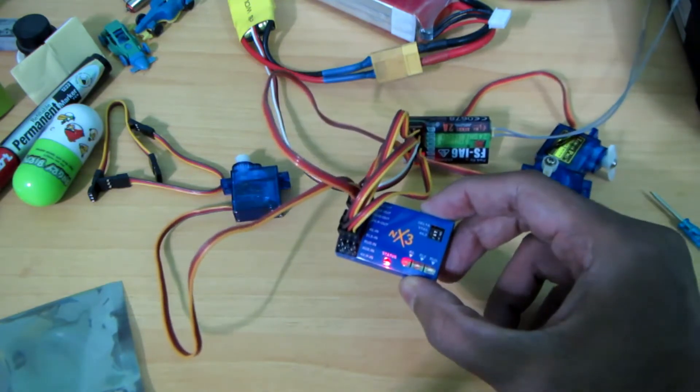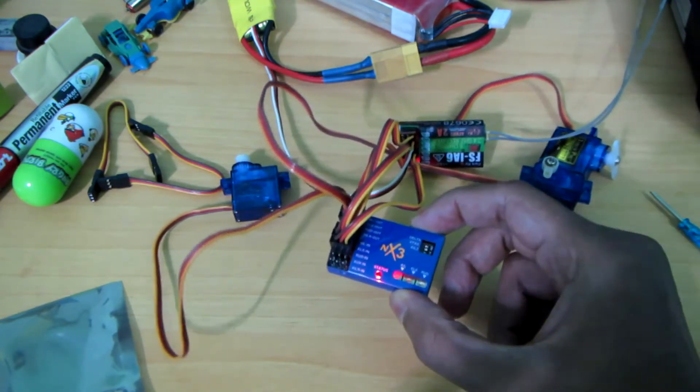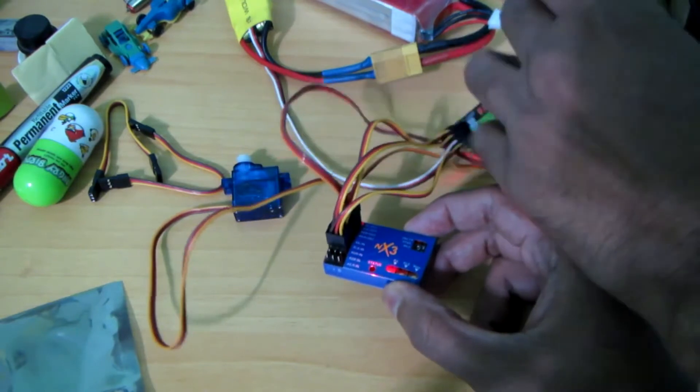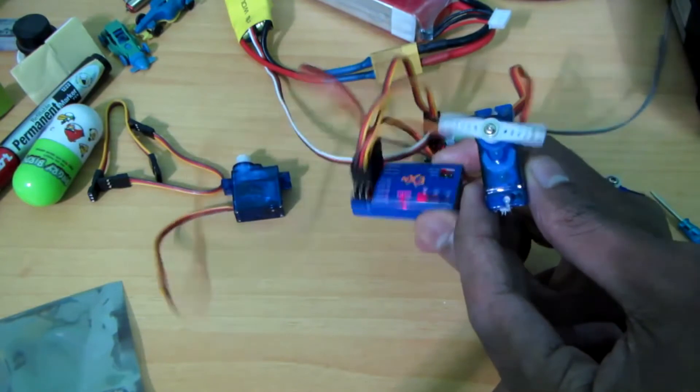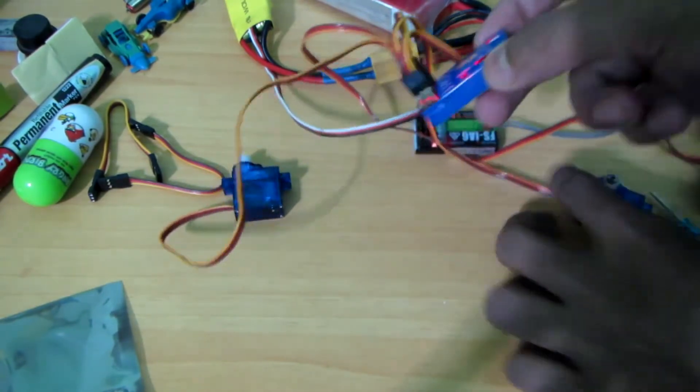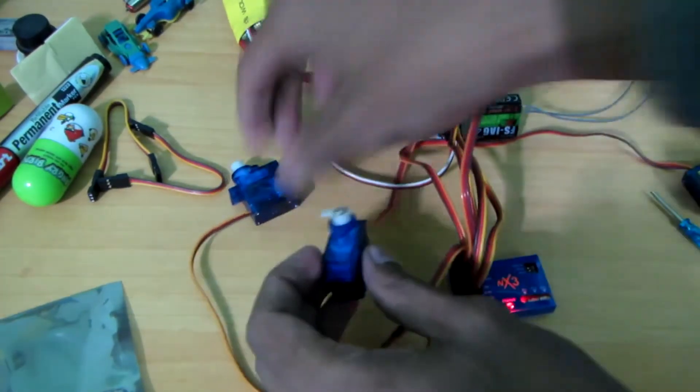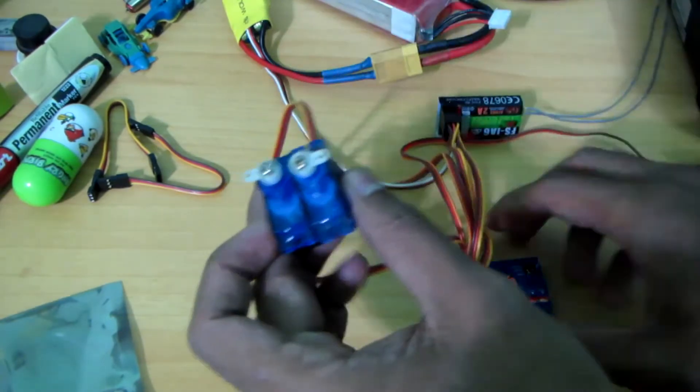You see the LED is glowing, that means this is on. This is the aileron servo and this is the V-tail servo.